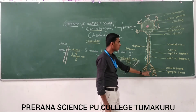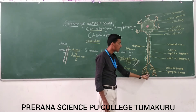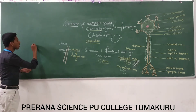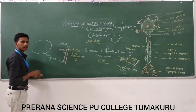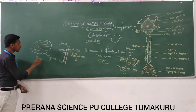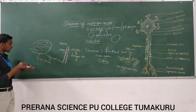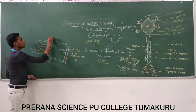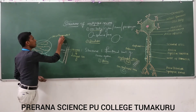The terminal portion of the axon is called telodendria. At the terminal portion there are bulb-like structures — those are called synaptic knobs. Within the synaptic knobs there are many vesicles called synaptic vesicles. These synaptic vesicles store chemicals called neurotransmitters.